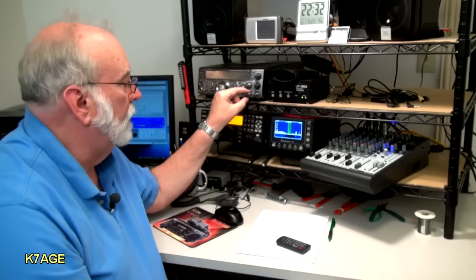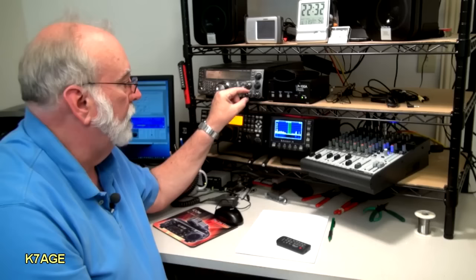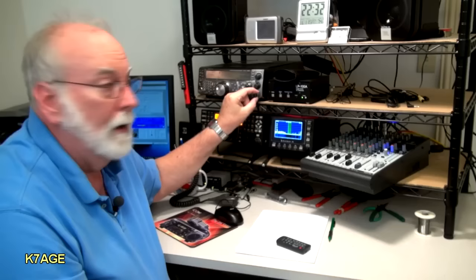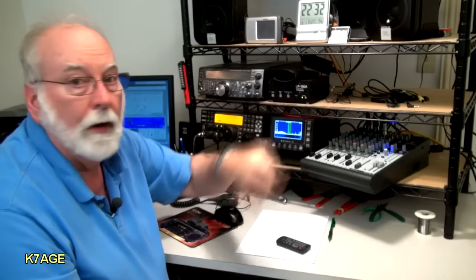I have that coming out of this speaker with the pan pot to the left. If I open up the squelch on the sub receiver, it comes out on the right speaker, and the scanner here is also set to come out over on the right speaker, so I think I'm pretty well set up.